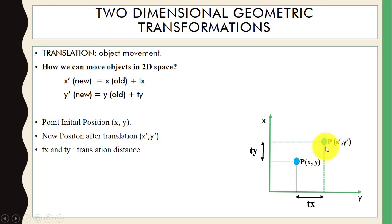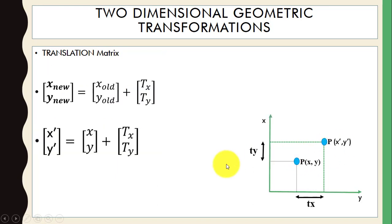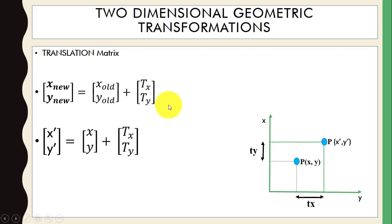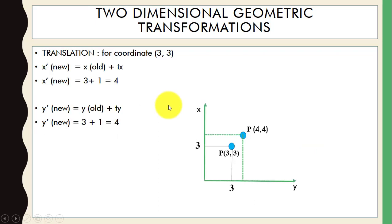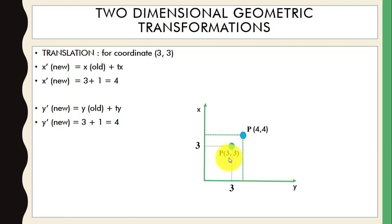Suppose we have an initial point P at (x, y); this is the new position of the point after translation. Here we have the translation matrix: new position equals old position plus translation distance. For example, we have a coordinate at position (3, 3) and we want to move this point.